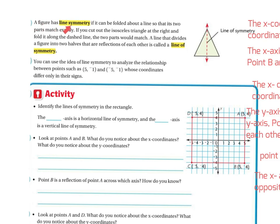A figure has line symmetry if it can be folded about a line so that its two parts match exactly. If you cut out the isosceles triangle at the right and fold it on the dashed line, the two parts would match. So if you cut it right here and you fold it right here, both of the sides are going to match. So it's line symmetry.